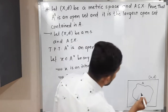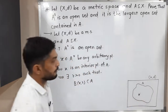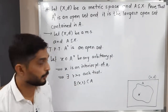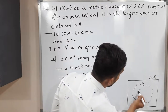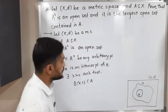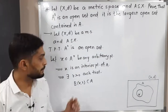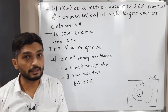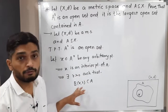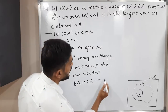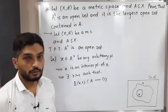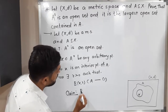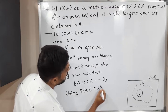By definition of interior point, that means we selected one point x from A interior, not from A but from A interior. Therefore it is an interior point, and we got that it is possible to draw a ball around x which is a subset of A. Our target is to prove that B(x, r) is a subset of A interior — then only we can say A interior is an open set. We have a very important piece of information: B(x, r) ⊆ A. I am calling it equation 1. Our claim is to prove that B(x, r) ⊆ A interior.